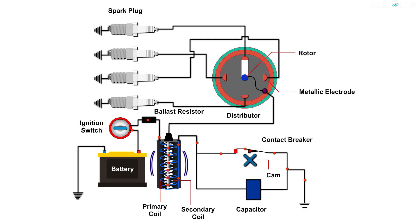This current in the primary coil generates a magnetic field around it. But when the contact breaker opens due to the rotation of the cam, the primary circuit breaks. At this time, the current flows through the capacitor, which prevents the points of contact breaker from producing sparks.